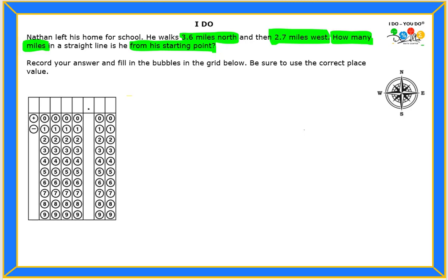So we have a compass to the right. We're going to use that one to show the movement that he did. So the red dot is Nathan. And from there, he went 3.6 miles north. So we're going to draw a line straight up. And that line is 3.6 miles. From there, he actually went 2.7 miles west. So we're going to go to the left because west is to the left. So he walked 2.7 miles west.